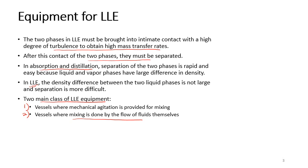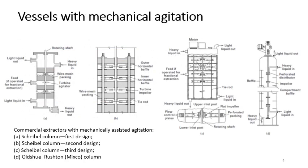You need to imagine how to mix the two liquid phases to achieve a high degree of turbulence to facilitate mass transfer — helping the solute transfer from the feed mixture into the solvent phase to produce distinct extract and raffinate phases, and then separating those two liquid phases. Here are some examples of vessels with mechanical agitation used to create turbulence and facilitate mass transfer.